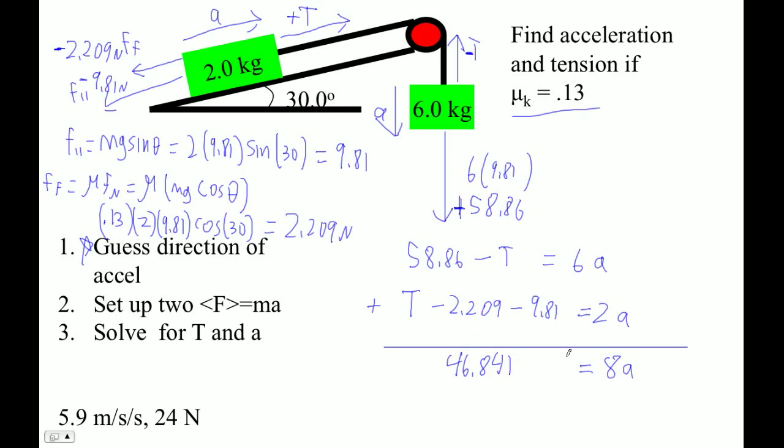So now we're going to divide by 8. We get 5.855, and that's 5.9. So there's that answer with two sig figs.